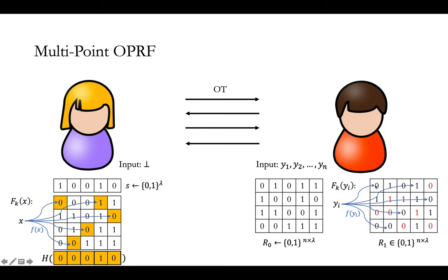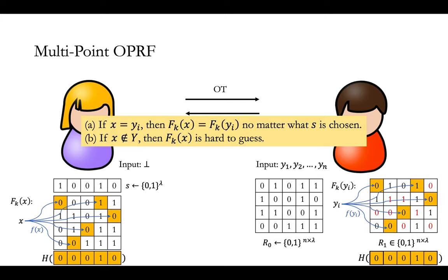The output is F_K(Y_i). We have the same guarantees as before: if x equals some y_i, then all the bits in those positions will be the same for both R0 and R1, so the output F_K(x) will equal F_K(y_i) no matter what S is chosen. On the other hand, if x is not in the set Y, then among those bits there will be many differences between R0 and R1, so it will be hard to guess F_K(x) for Bob unless he can guess correctly a lot of bits in S.